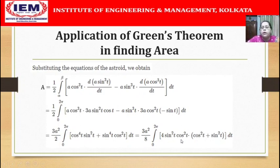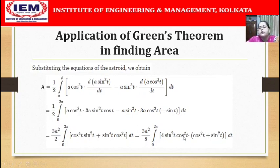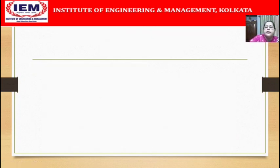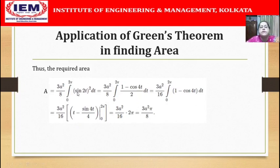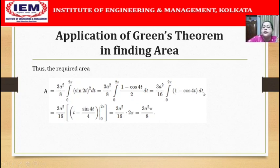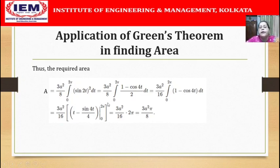Taking sin²t cos²t as a common factor gives cos²t plus sin²t, which equals 1. We write 4 sin²t cos²t as sin²(2t), dividing by 8 to adjust the half. Then sin²(2t) is rewritten as (1 minus cos 4t)/2, giving us 3a²/16 times the integral of (1 minus cos 4t) dt from 0 to 2π. Integrating gives t minus sin(4t)/4, evaluated from 0 to 2π, and the final answer is 3a²π/8.